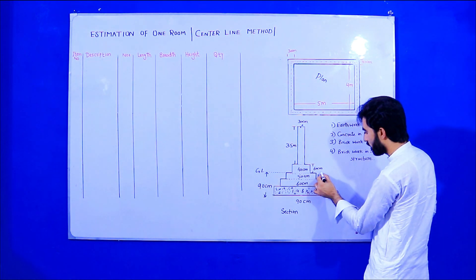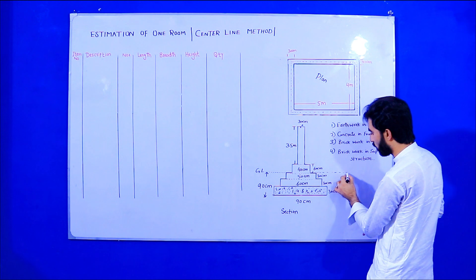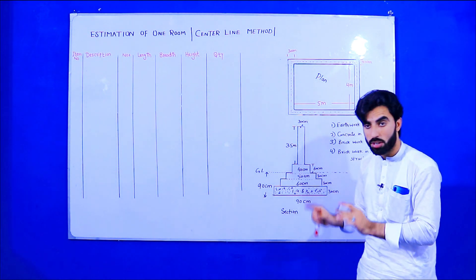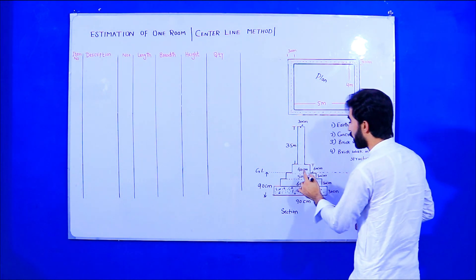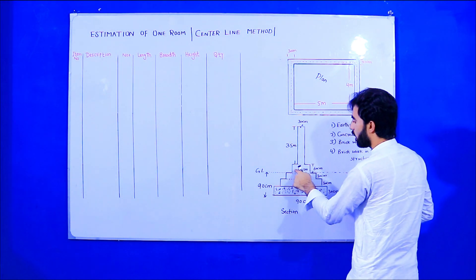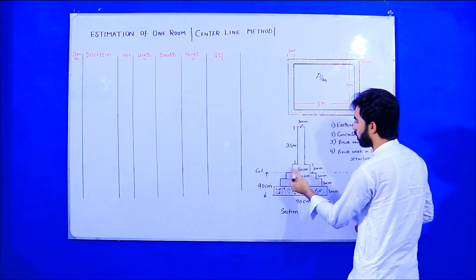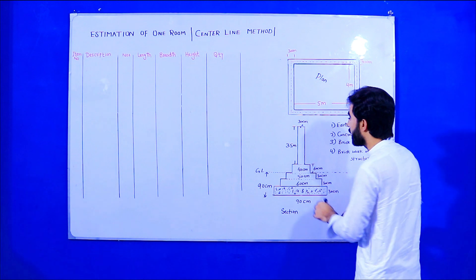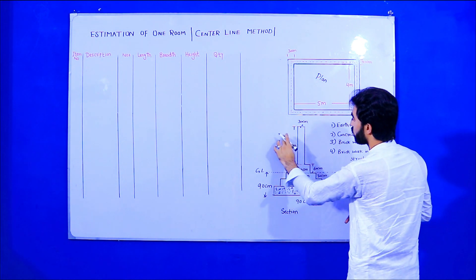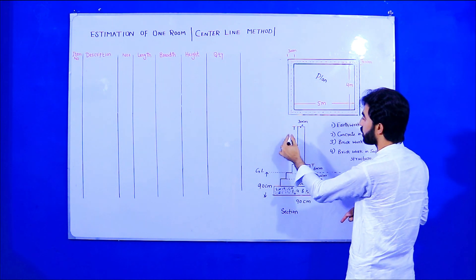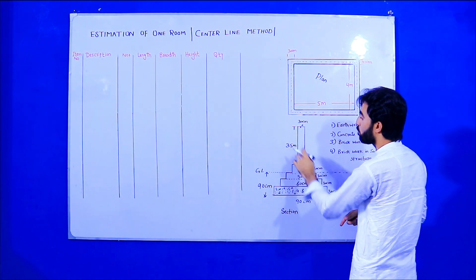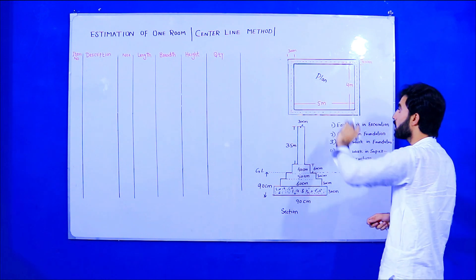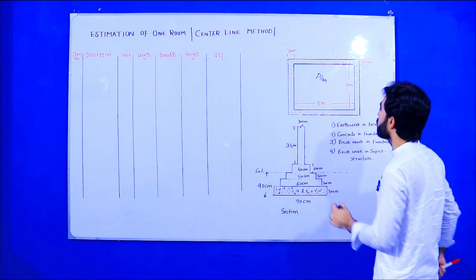From base to ground level we have a total of 30 plus 30 plus 30, which equals 90 centimeters to ground level. The fourth step is at plinth level, which is 40 centimeters wide and 60 centimeters deep. The superstructure wall height is 3.5 meters and the total height of the room is 5 meters.